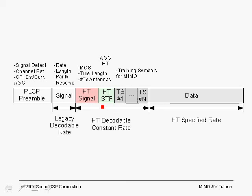Following the high throughput signal field, you have the high throughput short training field. This field is used for AGC refinement in order to do a better job of AGC and save, for example, a bit in the A to D, and decoding the data field for a high throughput packet. That is followed by the high throughput long training sequences, used to estimate the channel H matrix on a per carrier basis, which is covered in detail in a separate tutorial.